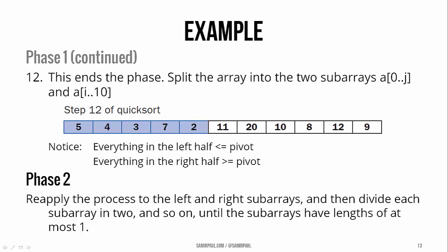So we end the phase. We're now going to split the array into two subarrays from 0 to j and from i to 10, which to help you see are shaded here. So the first subarray is shaded, the second one is white. One thing to notice, all the elements in the left array are less than or equal to the pivot. All the elements in the right subarray are greater than or equal to the pivot.